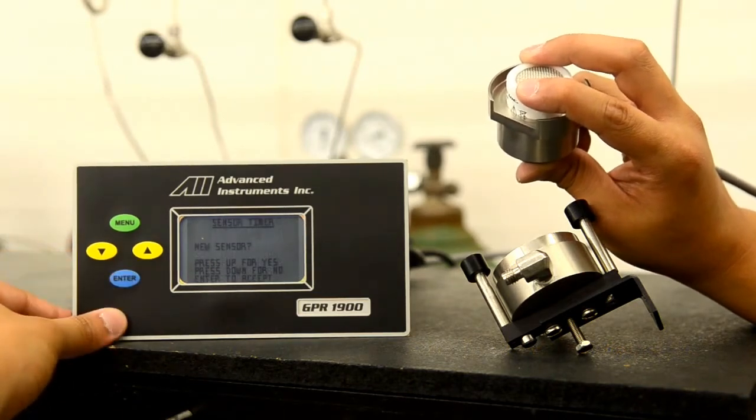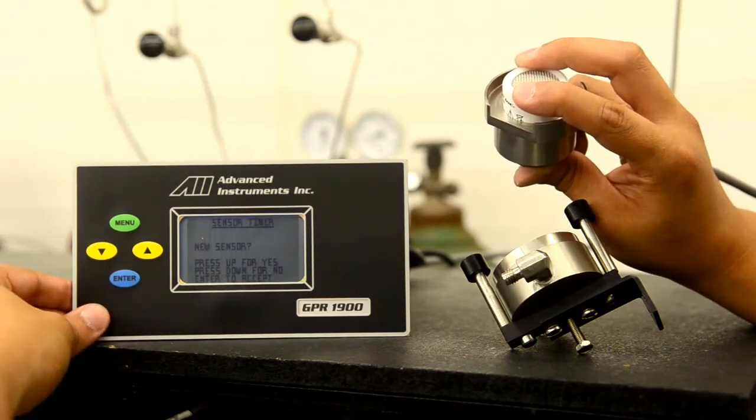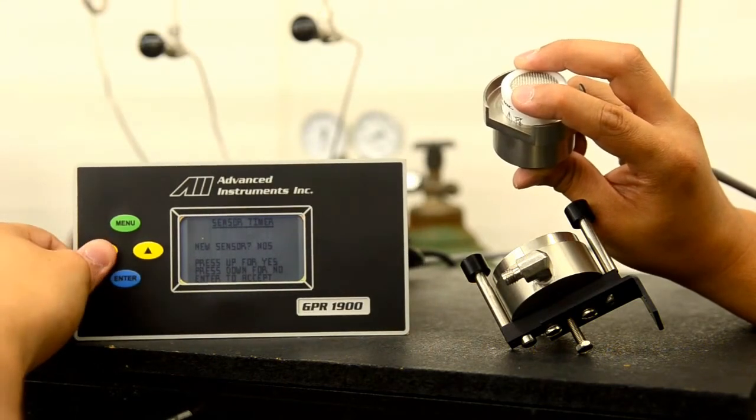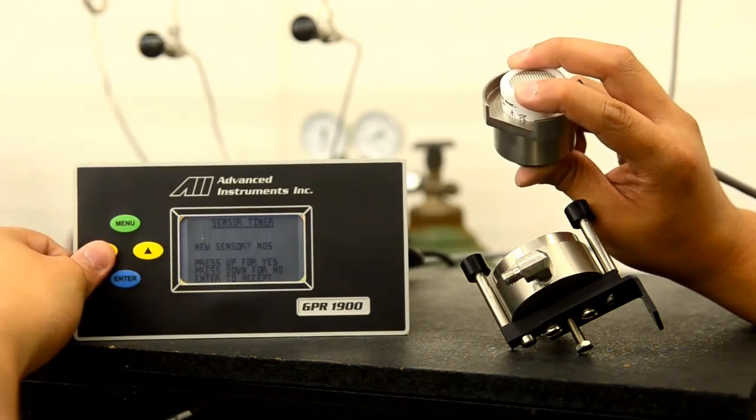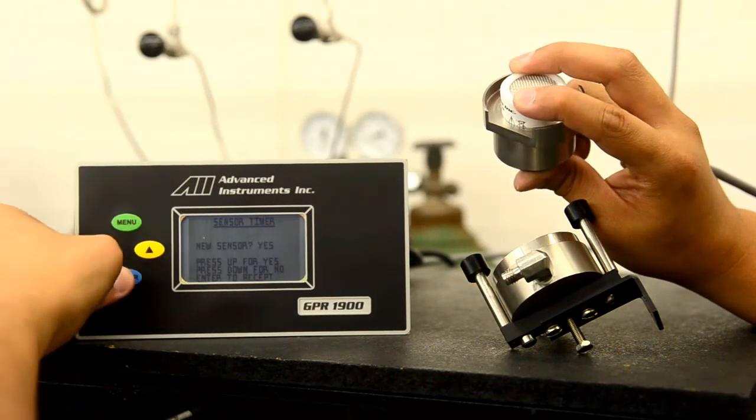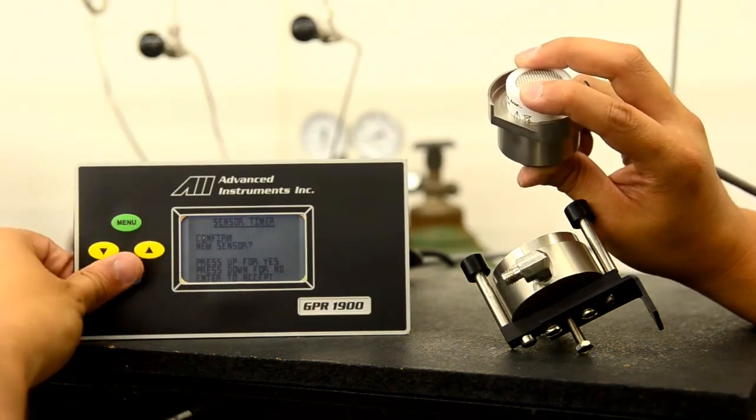We select enter and are prompted if this is a new sensor. Select up or down for yes or no. If this is a new sensor install, be sure to select yes. If this is a calibration on a current sensor, select no. You will be prompted to confirm your selection.